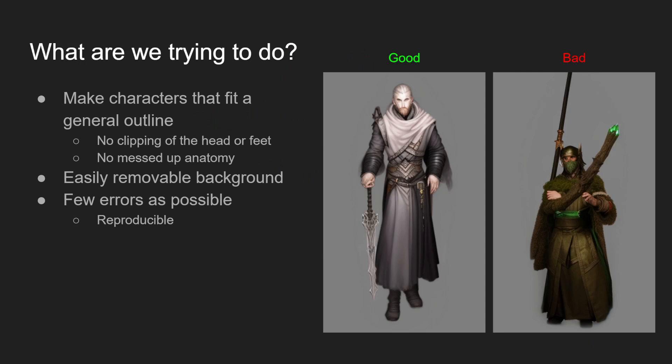So what are we trying to do? There are three main goals. We want to make a character that fits the general outline — no clipping of the head or feet, no messed up anatomy. We want an easily removable background, and we want as few errors as possible to make it as reproducible as possible. When we're making this automated AI game system, we can't have a human cherry picking these kinds of things, so every result needs to be as good as possible. Some examples on the right show good and bad — we want the guy on the left and don't want the person pulled all the way down with their feet clipping.